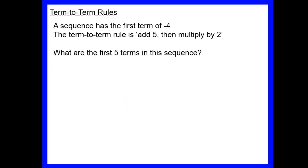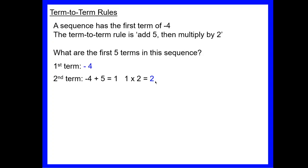Our last objective is to look at two-step term-to-term rules. A sequence has the first term −4, and the rule is: add 5, then multiply by 2. There are two stages — add 5 first, then multiply by 2. So from −4: −4 + 5 = 1, then 1 × 2 = 2. That gives us our second term.